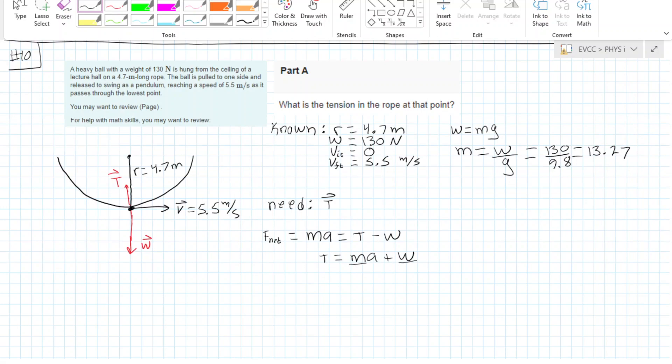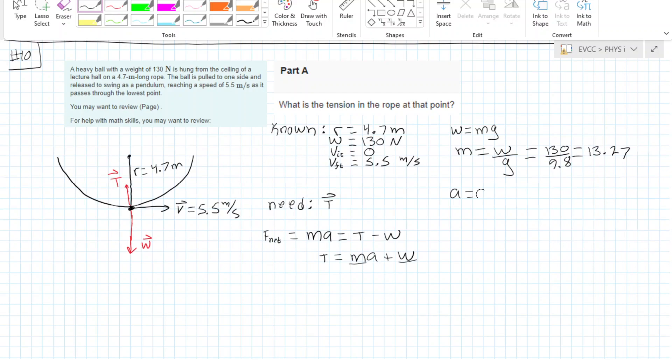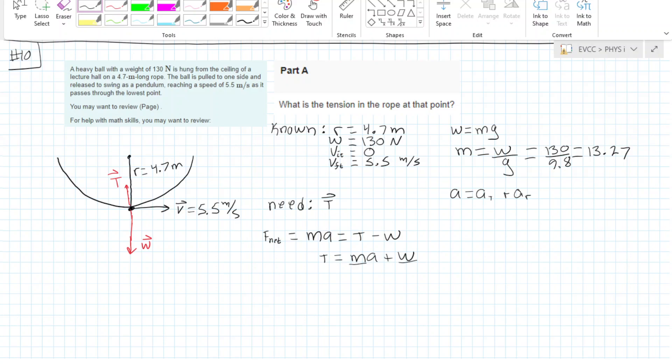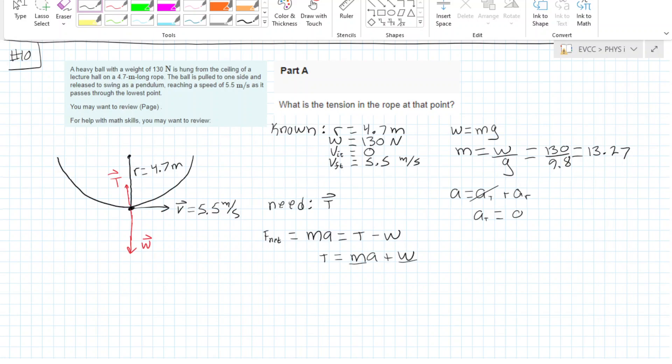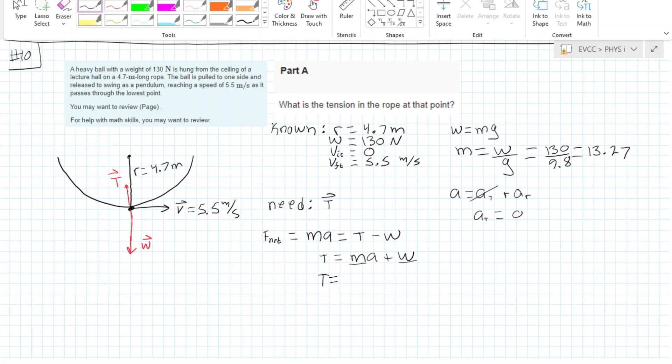But since we are at the bottom of this rotation, our tangential acceleration is actually zero until it starts moving up or down. Kind of like when a ball reaches its highest point, its acceleration becomes zero for a moment and then it changes direction. Same here—we reach the lowest point, it becomes zero and then starts going up again. So we don't really care about this, so we can just say that T equals m times radial acceleration plus W.